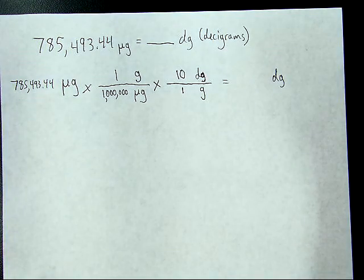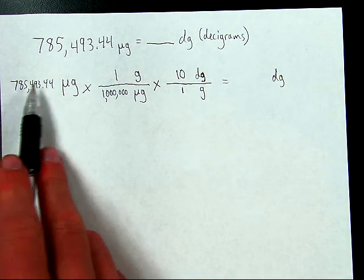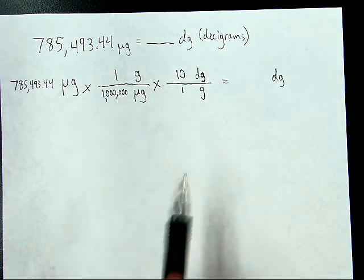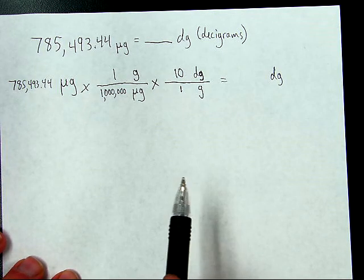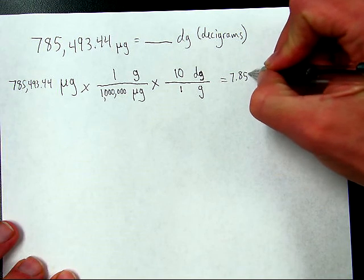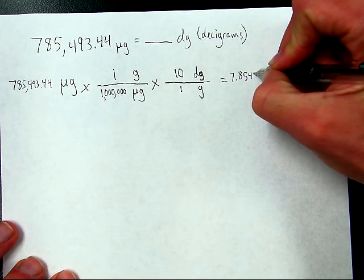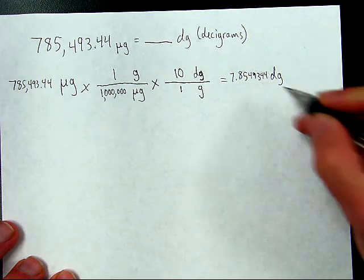Okay. That being done, basically with the calculator, I'm going to take this, divide it by a million, and then times it by ten. So when I do that, it comes out to 7.8549344 decigrams.